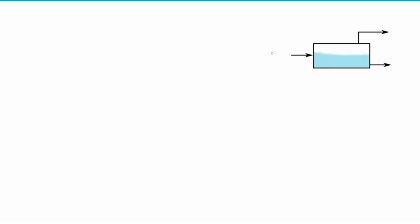Let's think about a flash separation. We have a feed which we enter into our flash separator at a composition of zi for each of our components. When we put that into our flash separator, it separates into a vapor with composition yi for each of the components and a liquid with composition xi for each of the components.